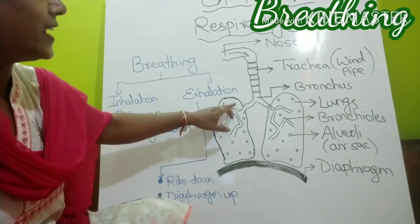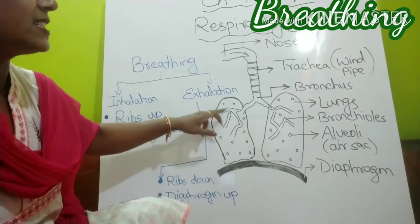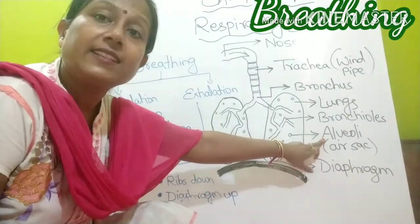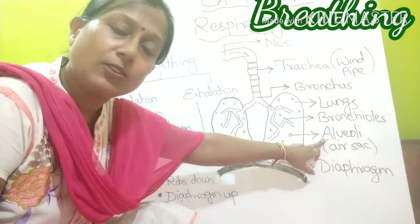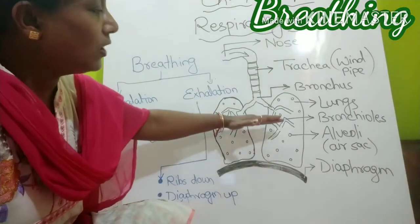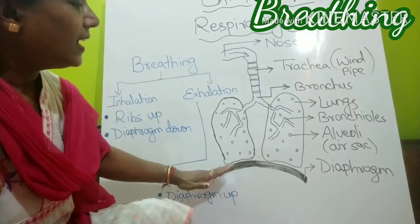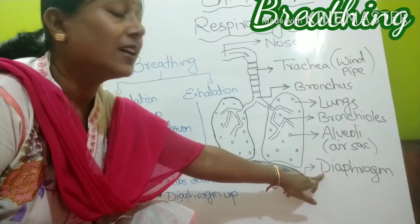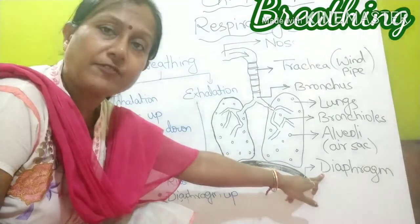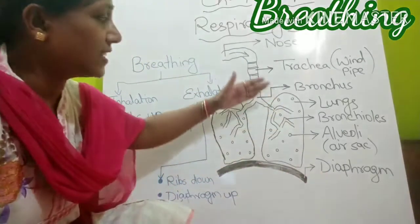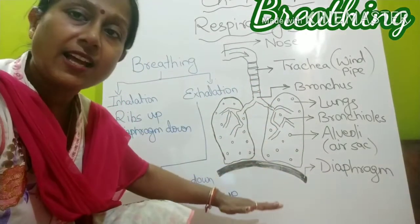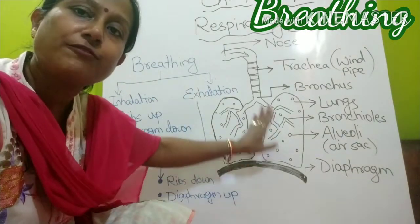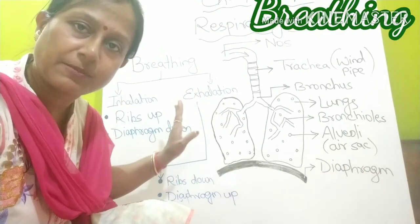The lungs have very small air cavities known as alveoli, where the air is filled. Now below this chest cavity, a muscular band is present which is known as the diaphragm. The diaphragm separates the chest cavity from the abdominal cavity. So this is the structure of the human respiratory system.